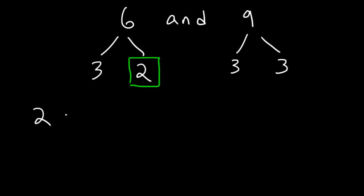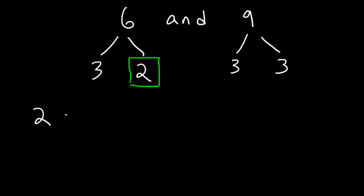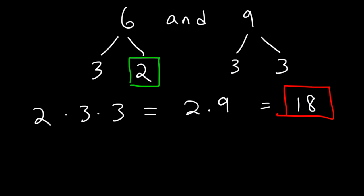What about 3s — should we use one 3, two 3s, or all three? You want to use the most number of 3s found in any one particular number. The most number of 2s found in one number is just one (from 6). The most number of 3s found in one number is two 3s (from 9). So we use two 3s: 3 times 3 is 9, and 2 times 9 is 18 — the LCM.